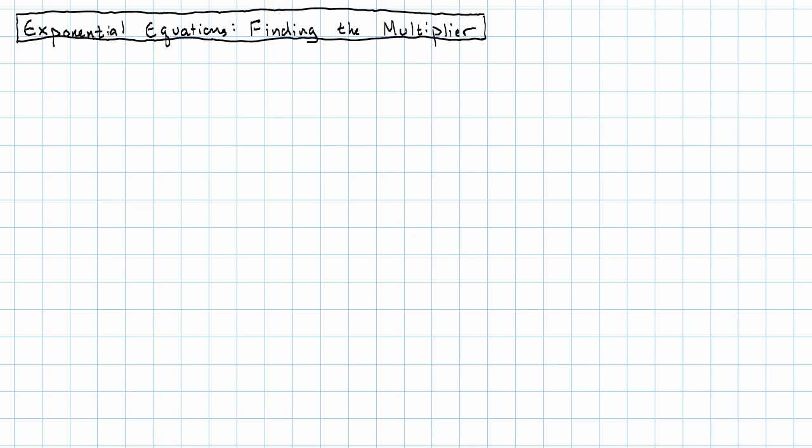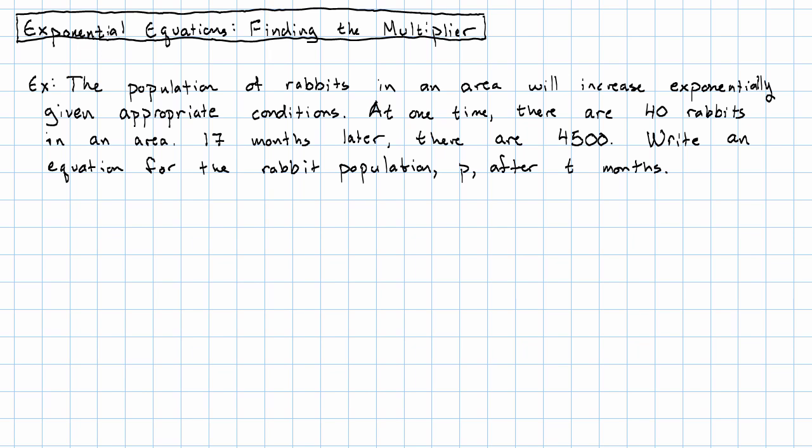For example, we might have a problem that looks like this. The population of rabbits in an area will increase exponentially given appropriate conditions. At one time, there are 40 rabbits in an area. And 17 months later, there are 4,500. We'd like to write an equation for the rabbit population P after T months.